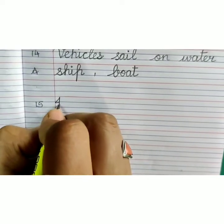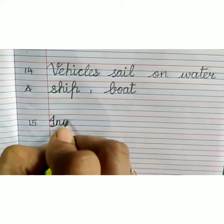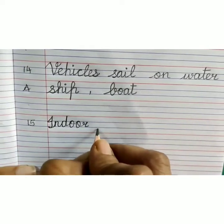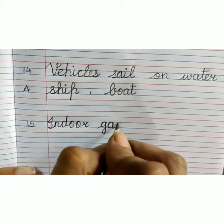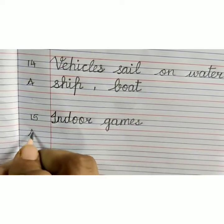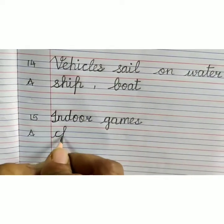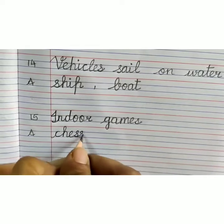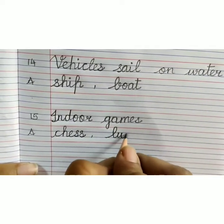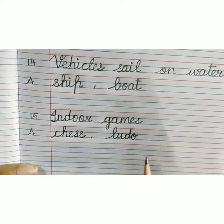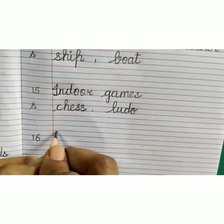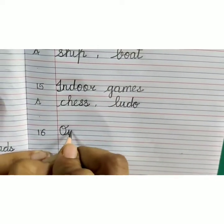Capital I-N, D-O-O-R, indoor, G-A-M-E-S, indoor games. Answer: C-H-E-S-S, chess, comma, L-U-D-O, ludo. Leave one line, write number 16.